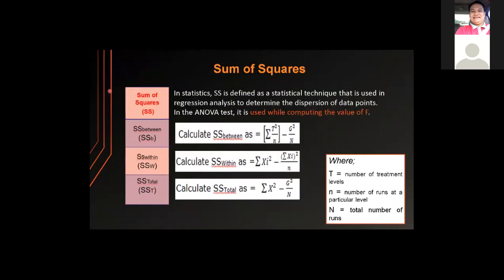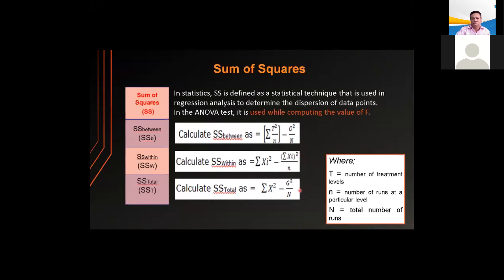The sum of squares is the sum of the standard deviations from the mean. In statistics, sum of squares is a statistical technique used in regression analysis to determine the dispersion of data points. In the ANOVA test, it is used in computing the value of F. The formula calculates the sum of squares between, the sum of squares within, and the sum of these two gives the total sum of squares.